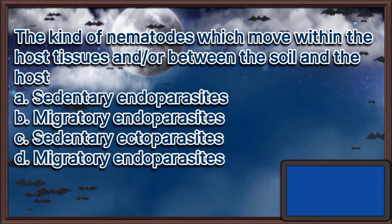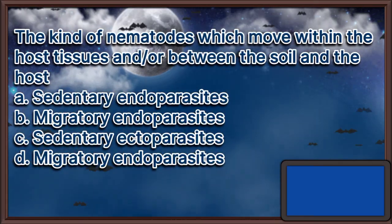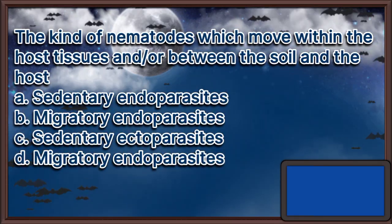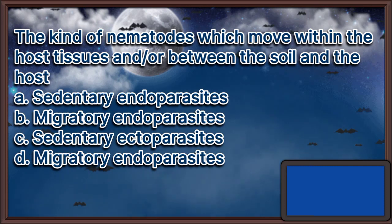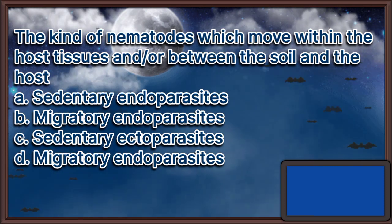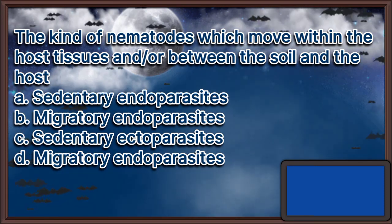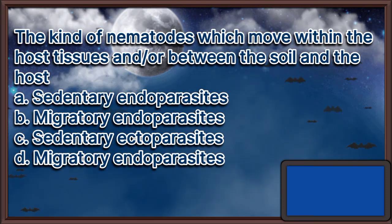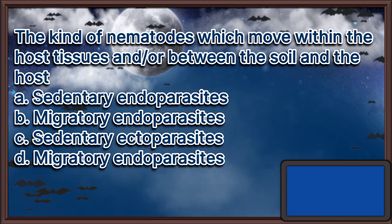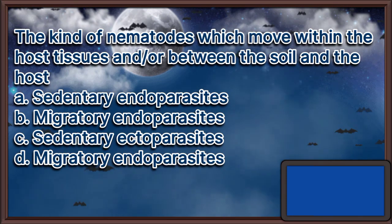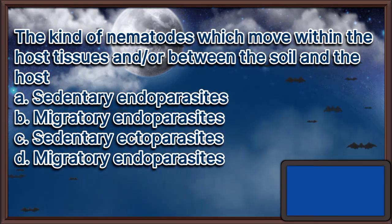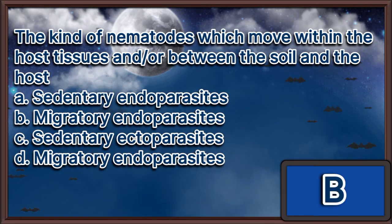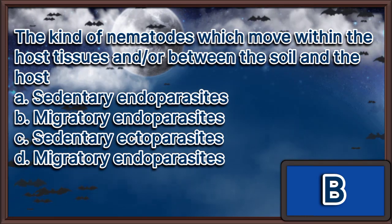The kind of nematodes which move within the host tissues and/or between the soil and the host. A. Sedentary endoparasites. B. Migratory endoparasites. C. Sedentary ectoparasites. D. Migratory endoparasites. The answer is letter B.